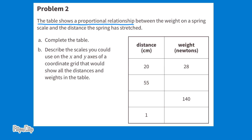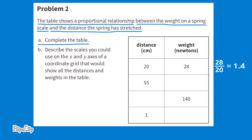Problem number two: this table shows a proportional relationship between the weight on a spring scale and the distance the spring has stretched. Part A: complete the table. We have distance in centimeters on the left and weight in newtons on the right. In the first proportional relationship, 28 newtons pulls the spring a distance of 20 centimeters. 28 divided by 20 equals 1.4. The proportional relationship is 1.4, meaning 28 is 1.4 times larger than 20. That means 55 times 1.4 equals 77, so the unknown weight is 77.